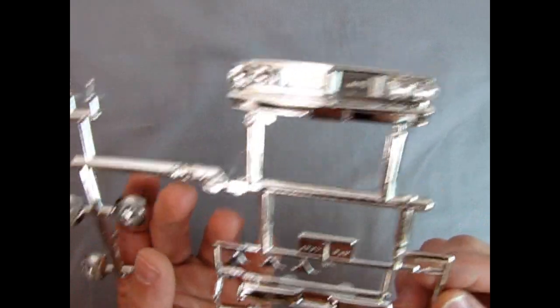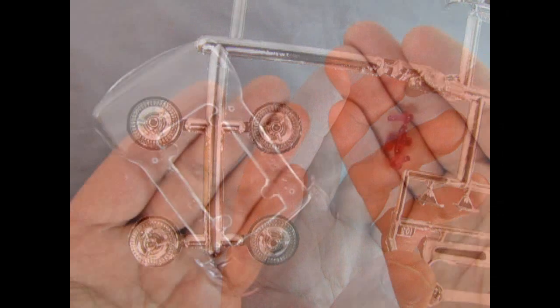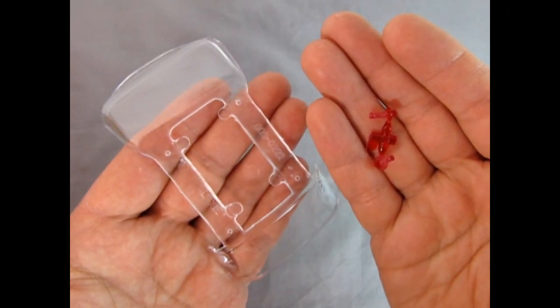A flashy chrome parts tree which includes grille, rear bumper, rear insert and wheels. Clear and transparent red pieces.